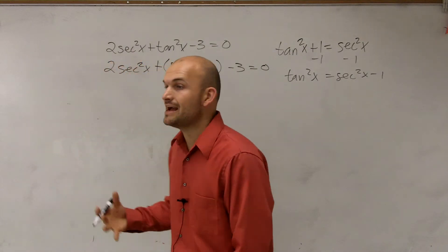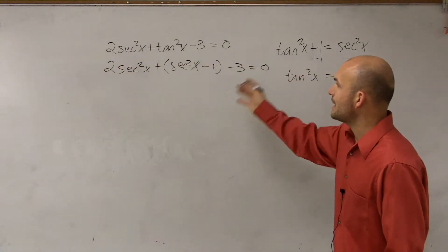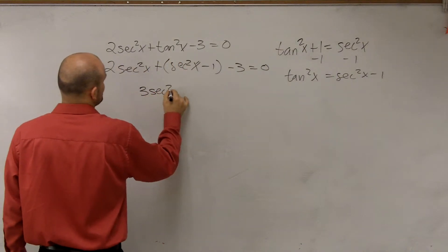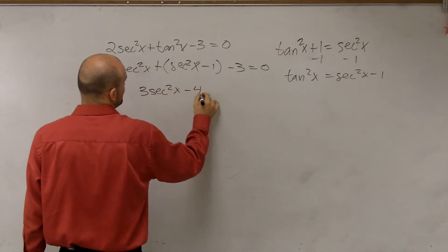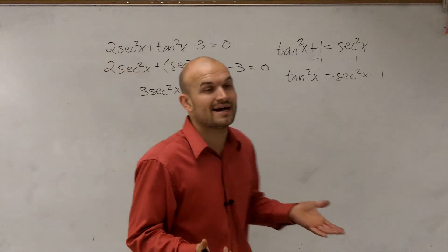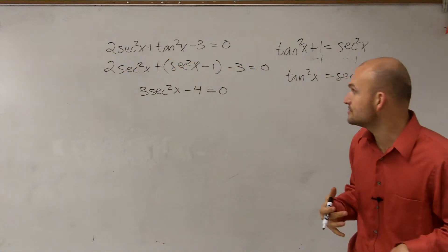Just rewrite them all in. Now I have them all in the same term. And now when I rewrite my problem, I can now write 3 secant squared of x minus 4 equals 0. So now you can combine your like terms, you combine the secant values.